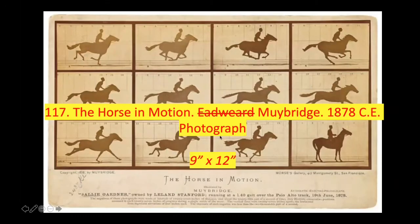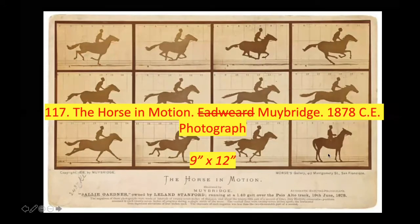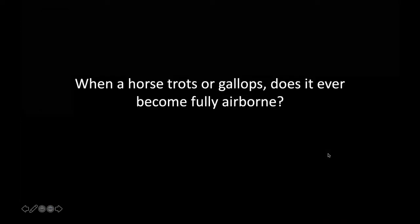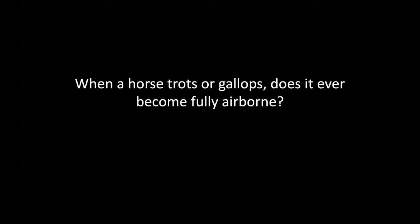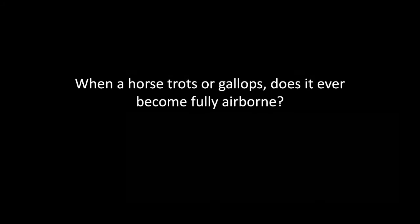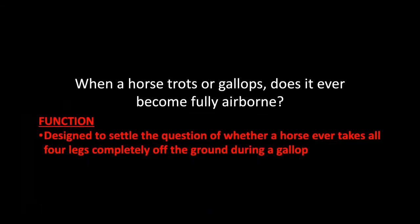Moving on to The Horse in Motion by Muybridge, 1878, a photograph, approximately 9 by 12 inches. Here's the question: when a horse trots or gallops, does it ever become fully airborne? Is it ever in the air, or is there always a foot touching the ground? That is the function of this artwork — it was designed to settle the question of whether a horse ever takes all four legs completely off the ground during a gallop.